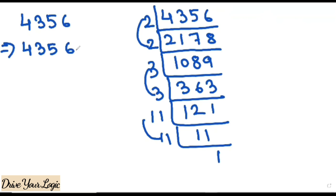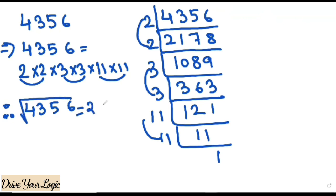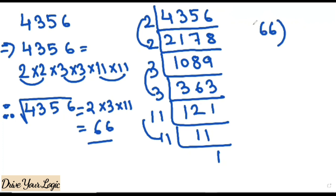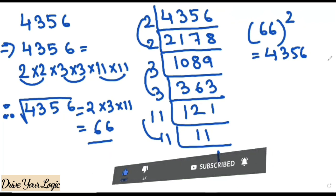Write it down: 4356 = 2 × 2 × 3 × 3 × 11 × 11. Finding the pairs: one pair of 2s, one pair of 3s, one pair of 11s. So the square root of 4356 = 2 × 3 × 11 = 66. You can recheck whether 66 squared equals 4356. Please go through this full video — this is important for students in standard 7 and 8. If you like the video, give a like and subscribe to my channel.